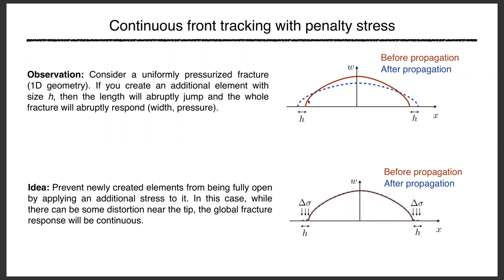The idea to mitigate this discrete jump: add a penalty stress near the tip. You numerically create the new element but apply additional stress of just the right magnitude to keep it fully closed. Because the element stays closed, global fracture behavior doesn't change abruptly. You then gradually decrease this penalty stress, progressively opening the tip element more and more — that's how you continuously propagate the fracture.